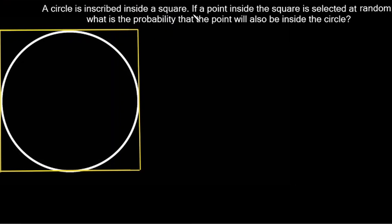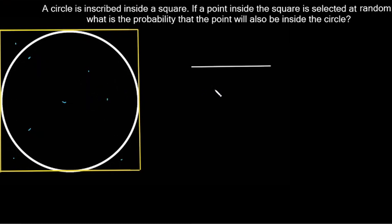A circle is inscribed inside a square. If a point inside the square is selected at random, what is the probability that the point will also be inside the circle? So what are all the possible outcomes for the location of our point? Well, that's going to be inside the square, which is going to be the area of the square. And the inside of the circle is going to be our desired outcome — that's where we want it, inside of the circle.